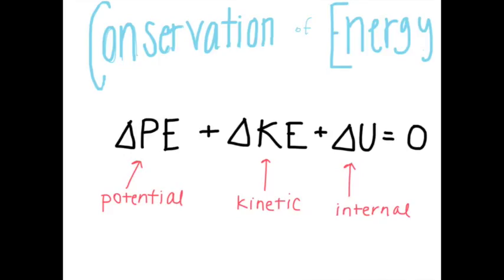When we account for internal energy, total energy of a system is always conserved. We can write that the change in potential energy, plus the change in kinetic energy, plus the change in internal energy that results from any given situation, will always equal zero. In other words, the net change in energy will be zero. So the overall amount of energy involved will never change.